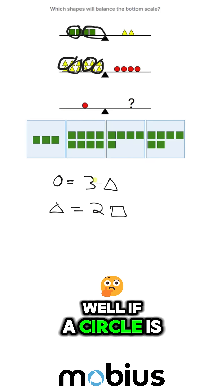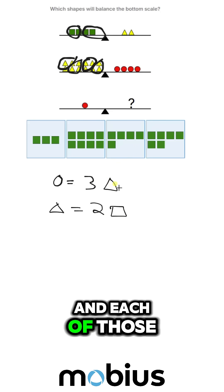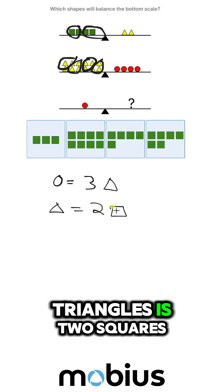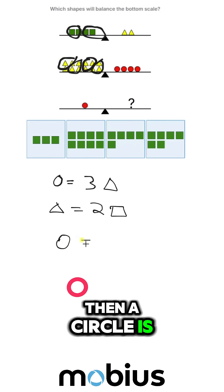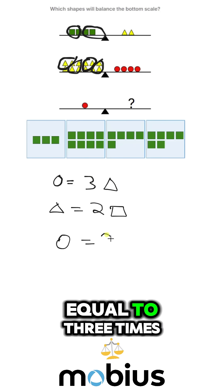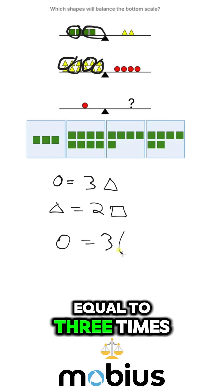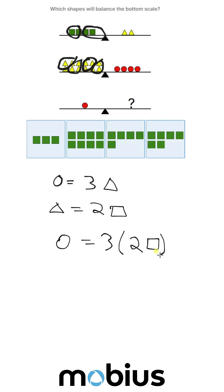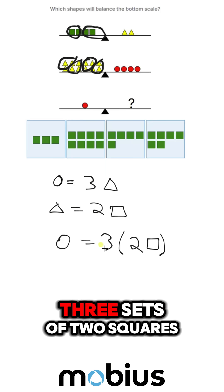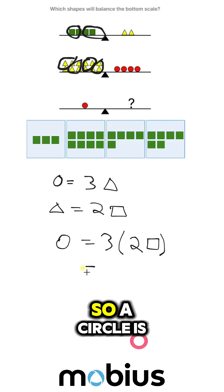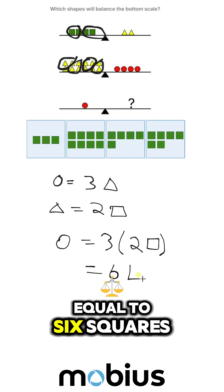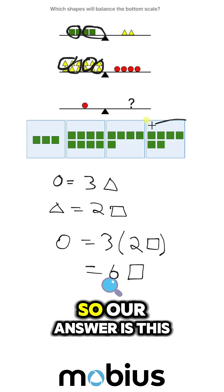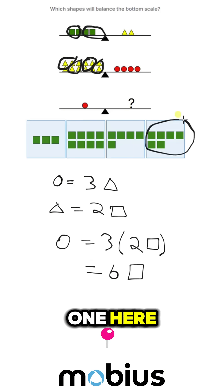Well, if a circle is three triangles and each of those triangles is two squares, then a circle is equal to three times two squares — three sets of two squares. So a circle is equal to six squares. So our answer is this one here.